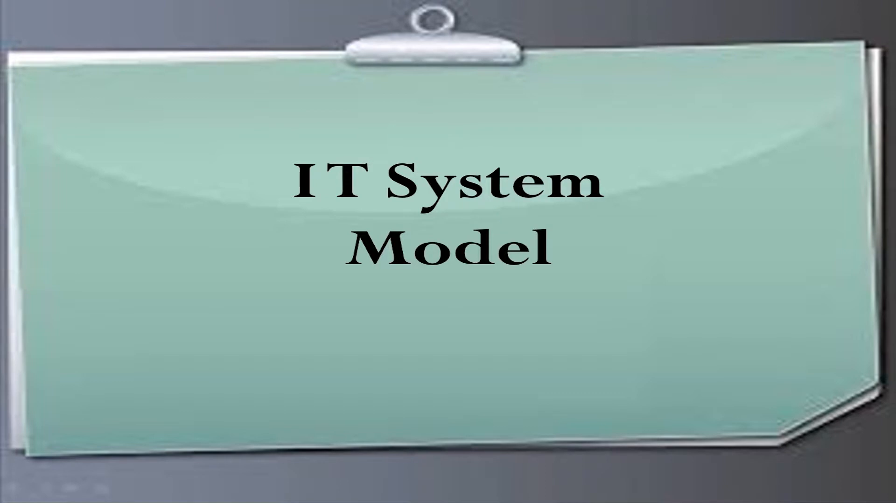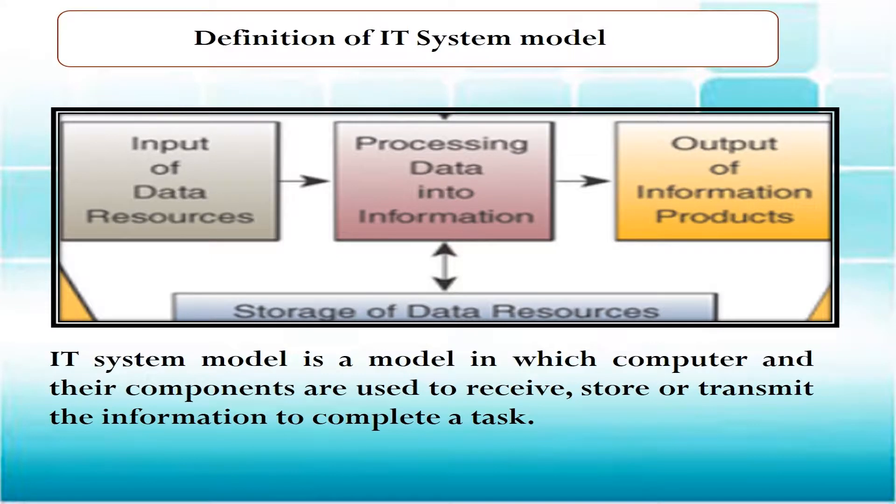An IT system model is a model in which a computer and its components are used to retrieve, store, or transmit the information to complete a task. An IT system model is divided into three parts: input, processing, and output.